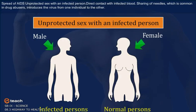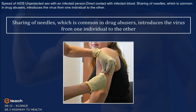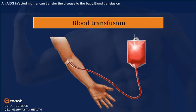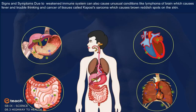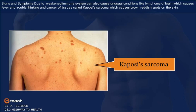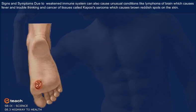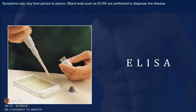Spread of AIDS: Unprotected sex with an infected person; direct contact with infected blood; sharing of needles, which is common in drug abusers, introduces the virus from one individual to another. An AIDS-infected mother can transfer the disease to the baby. Blood transfusion. Signs and Symptoms: Due to the weakened immune system, unusual conditions may arise like lymphoma of the brain, which causes fever and troubled thinking, and cancer of tissues called Kaposi's sarcoma, which causes brown-red spots on the skin. Symptoms may vary from person to person. Blood tests such as ELISA are performed to diagnose the disease.